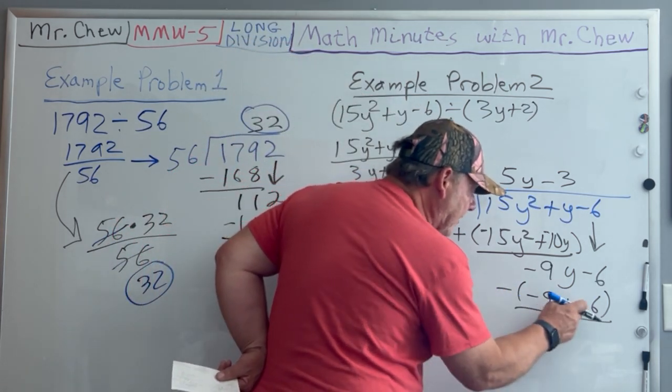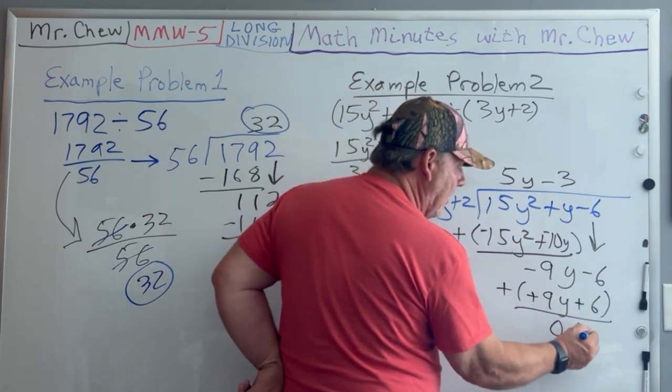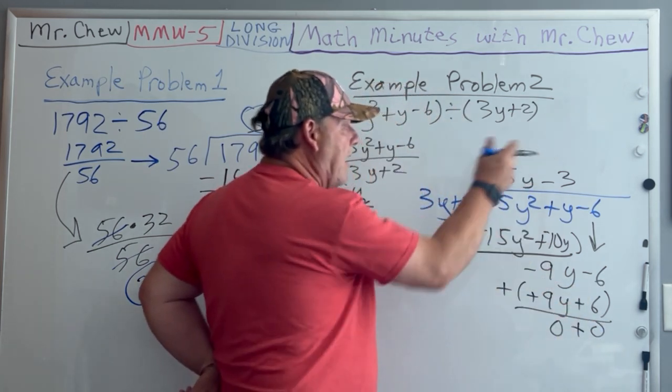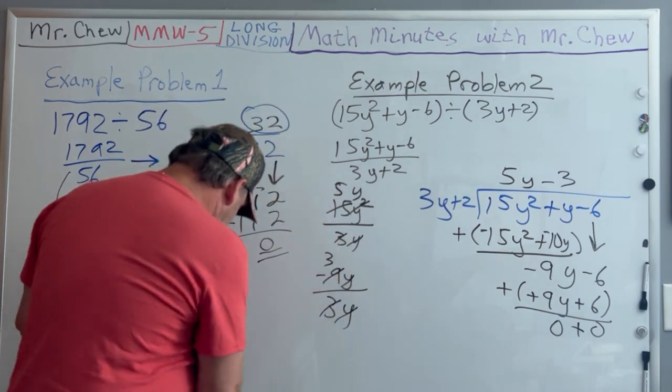When you subtract the negative, that becomes positive. When I add down, I get zero, which means there's no remainder. That's the answer.